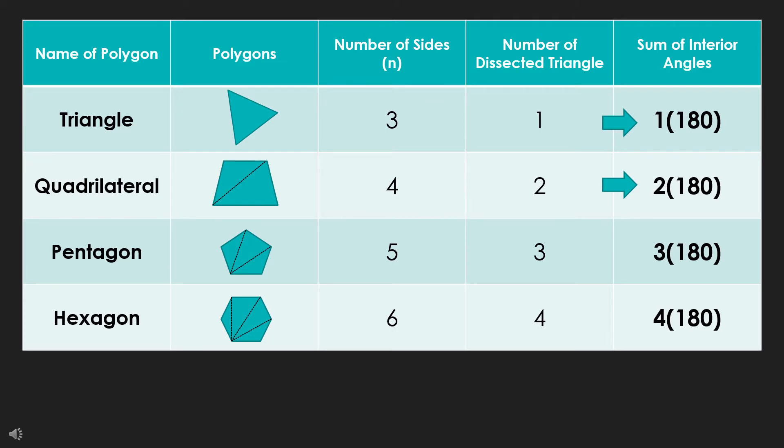Pentagon, with five sides, has three triangles. Thus, it will be 3 times 180. And hexagon, which has six sides, will have four triangles, and so the sum of the interior angles will be 4 times 180, and so on.